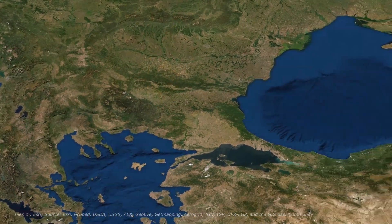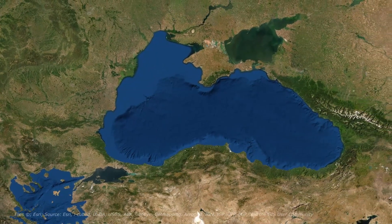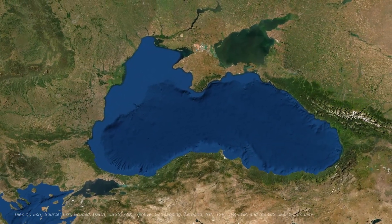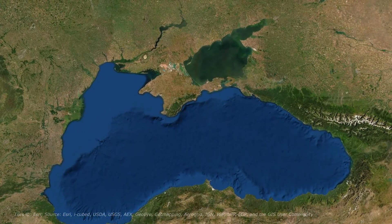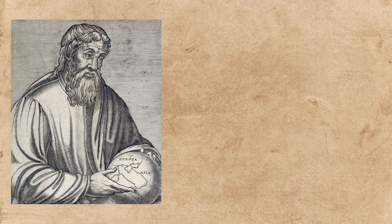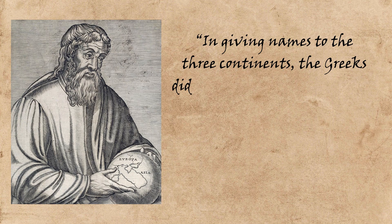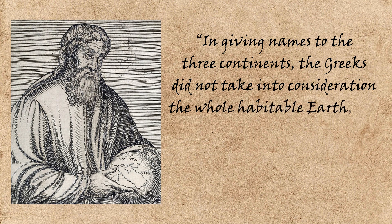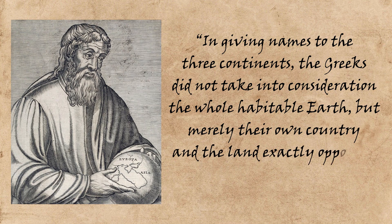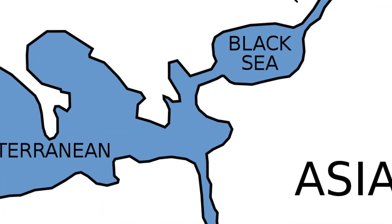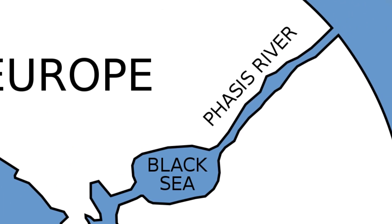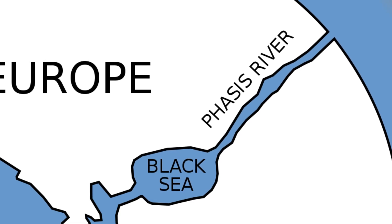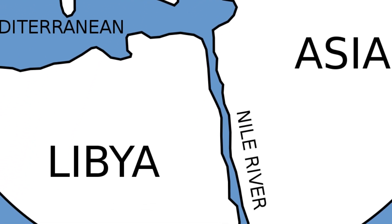But even back in this time, people knew that Europe and Asia were in fact connected by land north of the Black Sea, and had already begun to question why two conjoined regions would be their own separate continents — talk about the original Euroskeptics. Writing in the first century BC, Strabo made the observation that in giving names to the three continents, the Greeks did not take into consideration the whole habitable Earth, but merely their own country and the land exactly opposite. Anaximander defined the border between Europe and Asia as following the Phasis River in Georgia until it reached the Caspian Sea, and the border between Asia and Africa as the Nile.